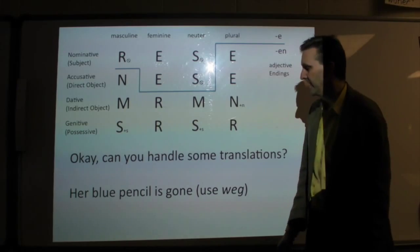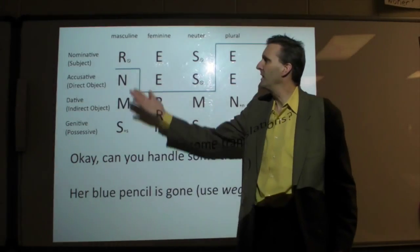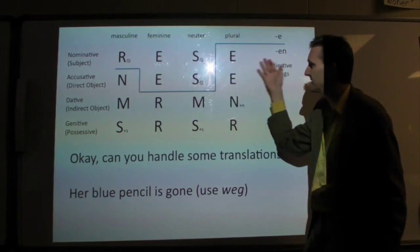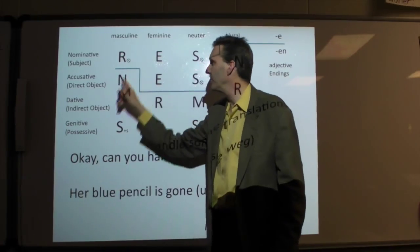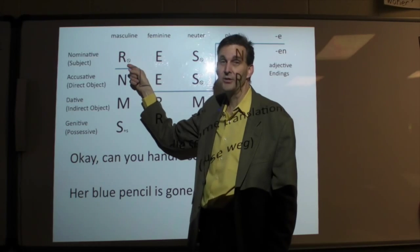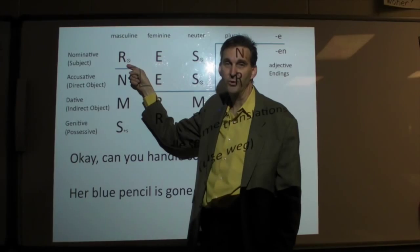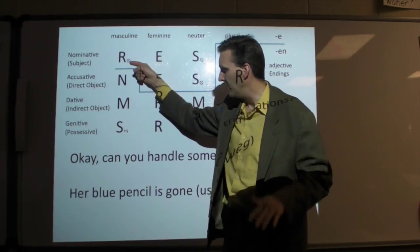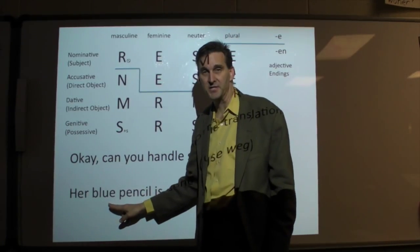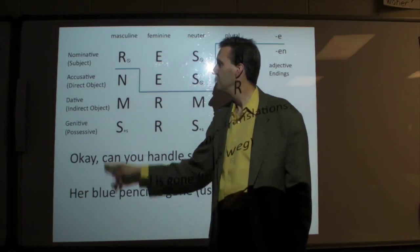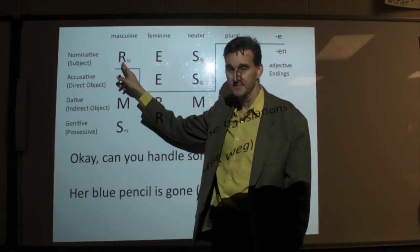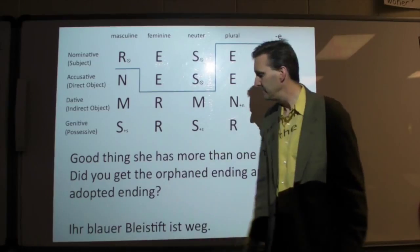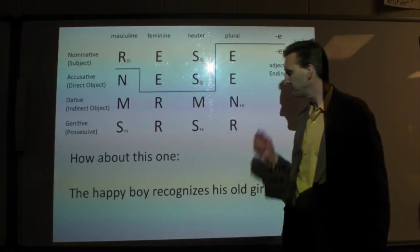All right, start some translations. Her blue pencil's gone. Her blue pencil. Pencil, do you know what the gender that is? Pencil is masculine. And it's the subject of the sentence, so we are on this one here. Does ihr orphan its endings? Yes it does. Ihr is an Ein word. Remember all of the possessives are Ein words and all of the possessives orphan their endings here, here and here. So no ending on ihr, just ihr. Then we want to adopt that R that we've orphaned on this word blue. So therefore blau-er. So ihr orphaned, blau-er adopted. Ihr blau-er Bleistift ist weg.